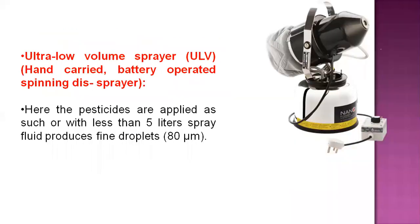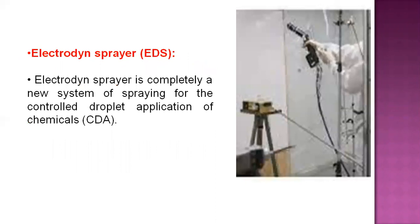A newer type of sprayer applies pesticides with less than 5 liters of spray fluid and produces very high droplets of about 80 microns. This is called the ultra-low volume sprayer and is a hand-carried battery-operated sprayer. Finally, the electrostatic sprayer is a completely new system for droplet application of chemicals, generally used in experimental conditions. These are all the spraying equipments used for different purposes.